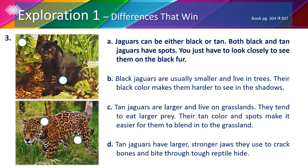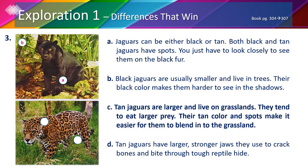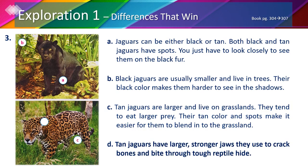A describes the spots found on the skin of all jaguars, so A goes with the spots. B describes how black jaguars are smaller and hide in trees, so B goes there. C describes how tan jaguars live in grasslands because their color helps them blend in. And D describes how tan jaguars have stronger jaws to bite their prey, so D goes there.